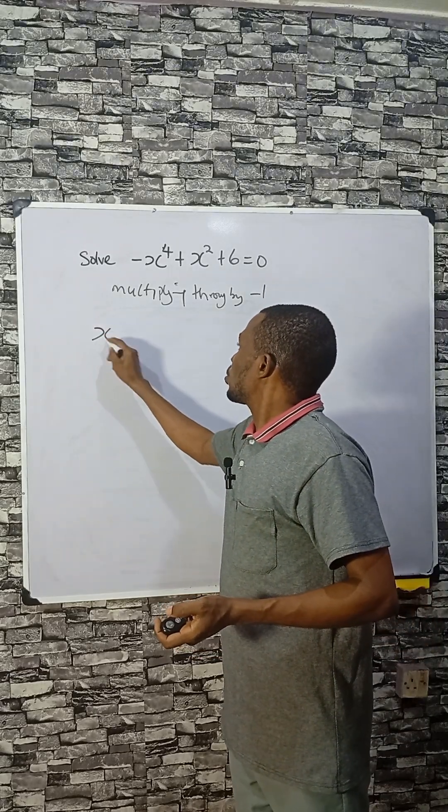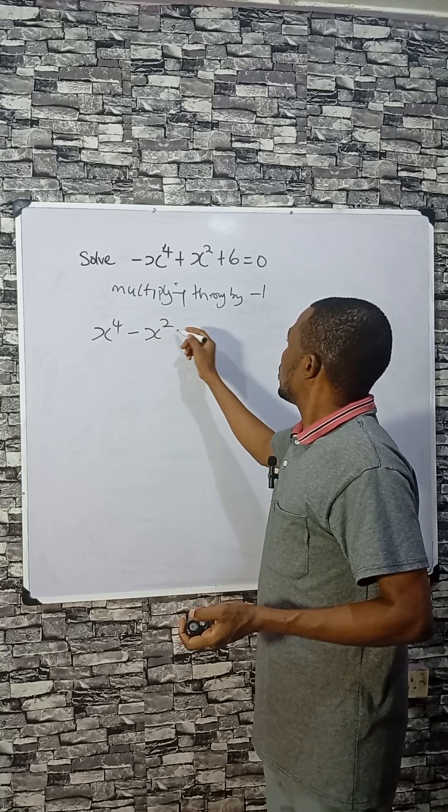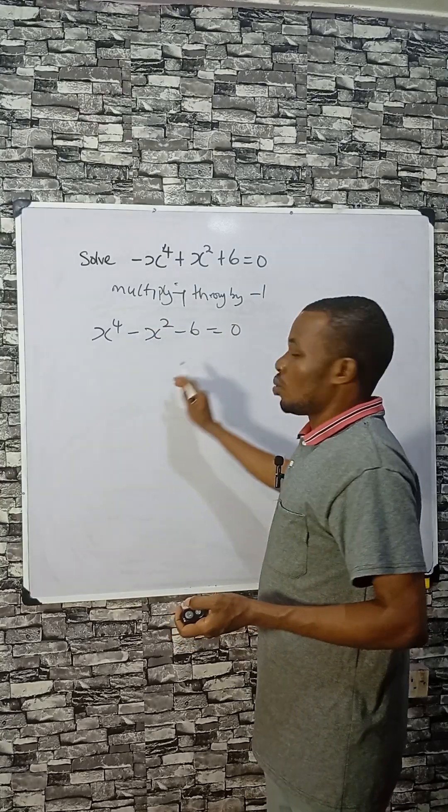That will be x to the power 4 minus x squared minus 6 equal to zero.